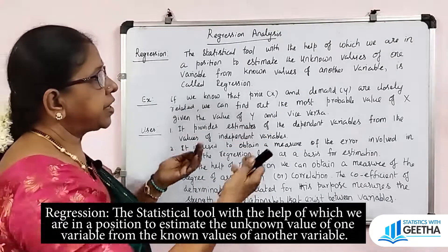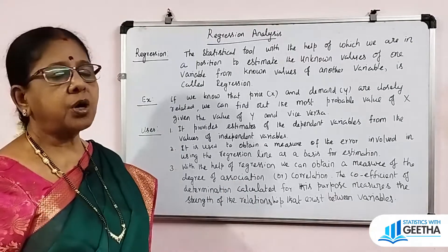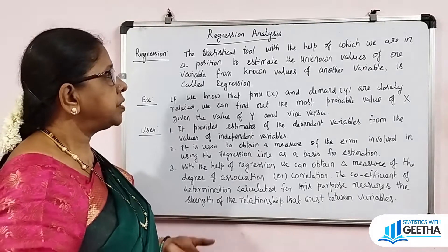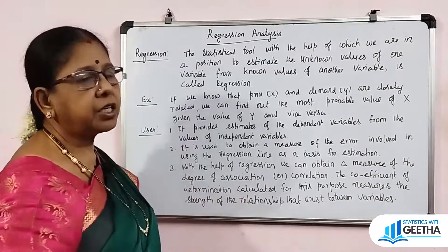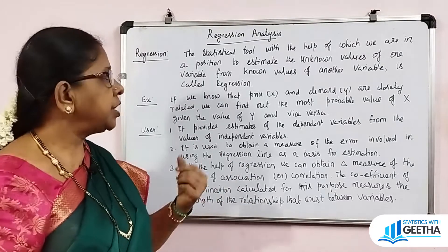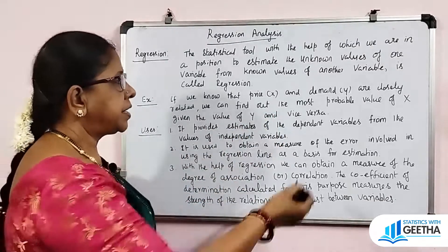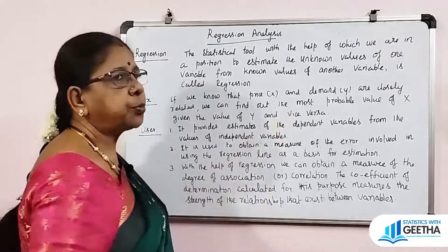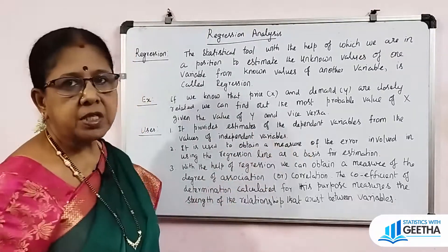We are going to see the correlation between the two variables. If they are closely related, we will estimate through regression. For example, if we know that price x and demand y are closely related, we can find out the most probable value of x given the value of y and vice versa.